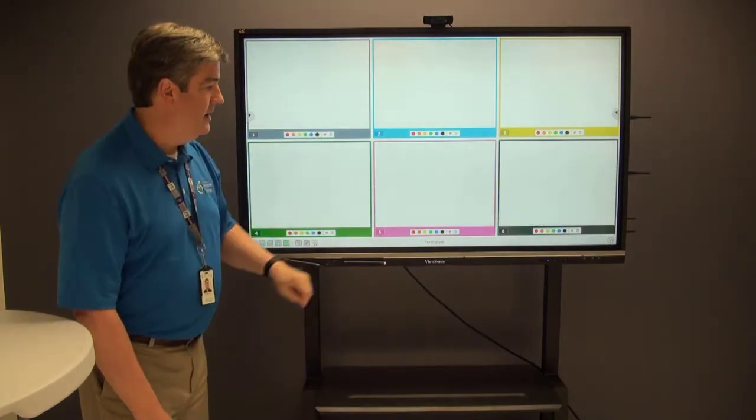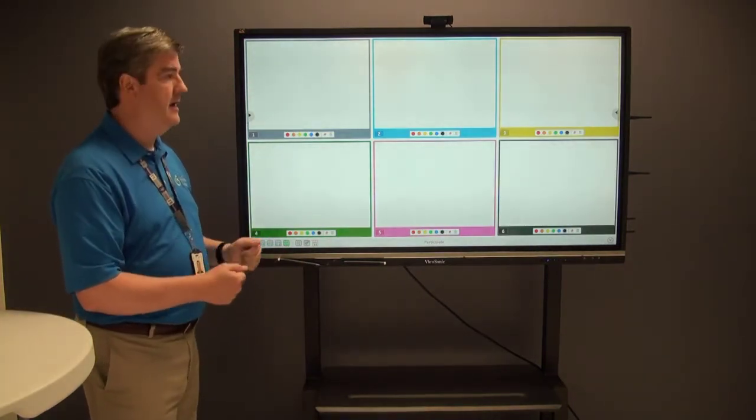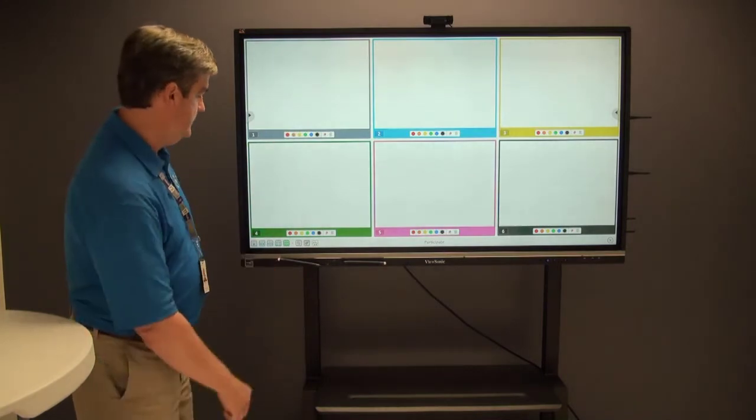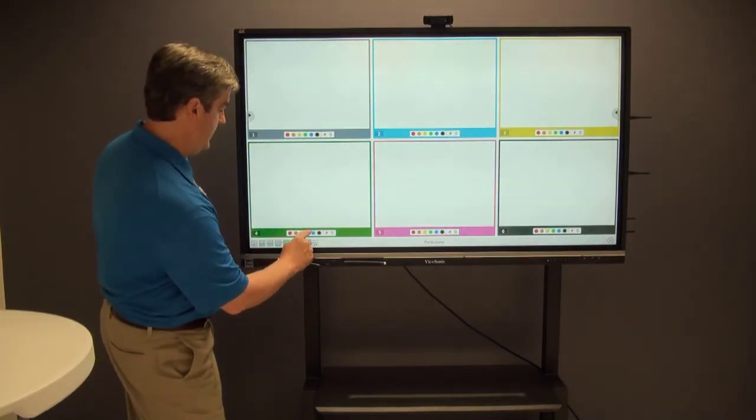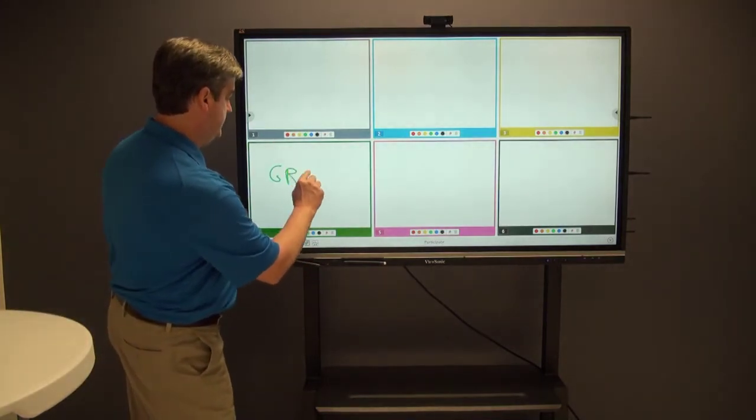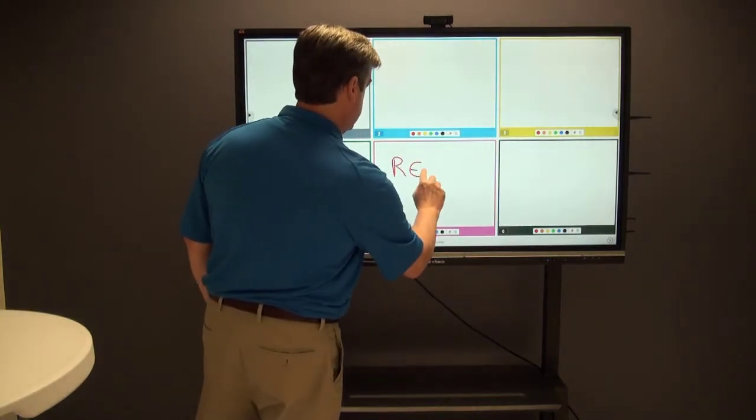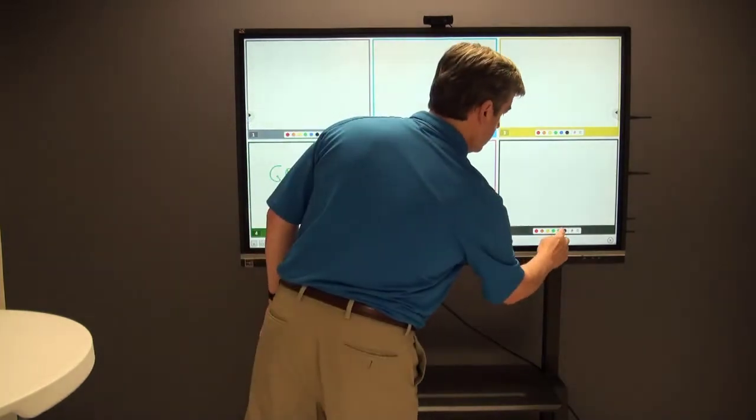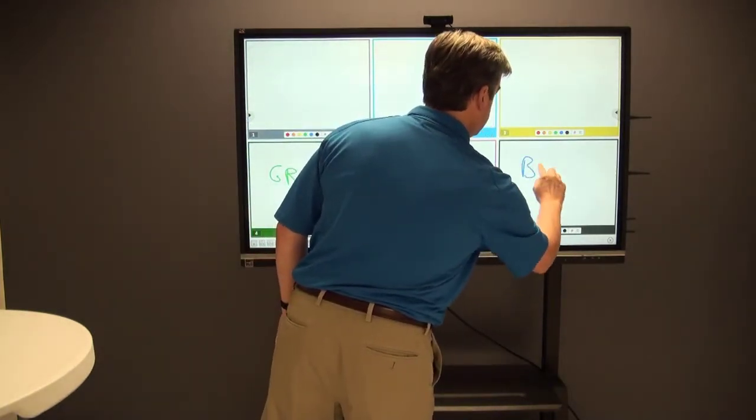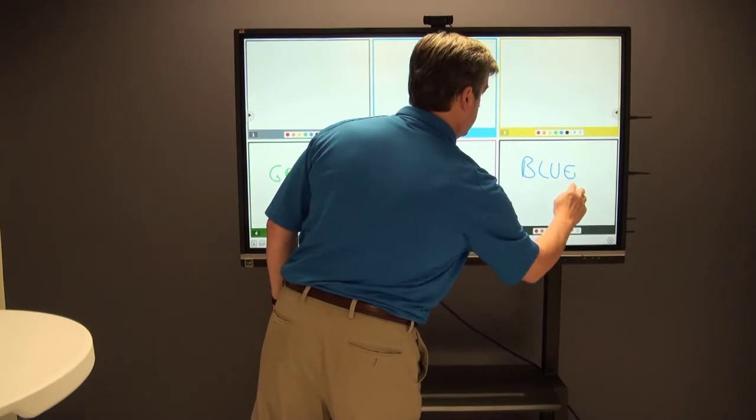So let's say that I have a student here working in the green space. I have another student working in the red space over here, and have another student who's working in this space, the blue space.